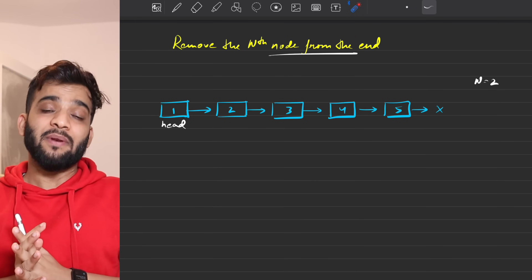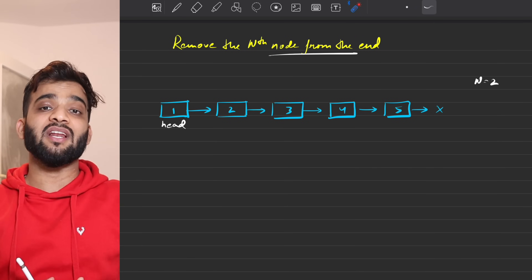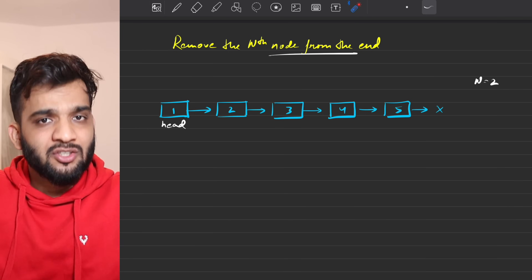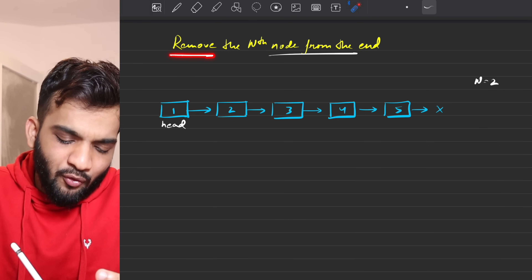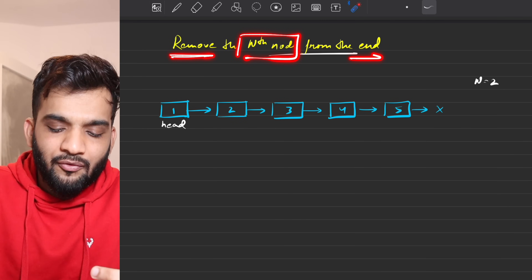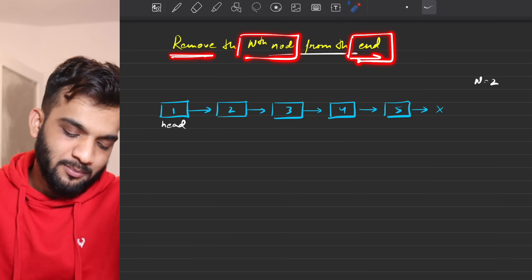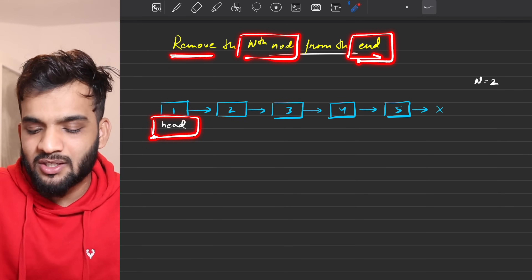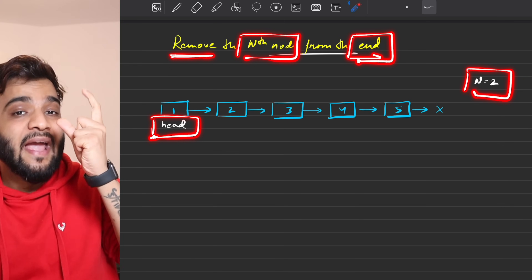Welcome back to the channel. The problem we will be solving today is removing the nth node from the end. The problem states that given the head of a linked list and a value n, you have to count n from backwards.